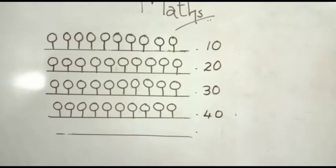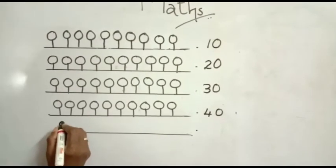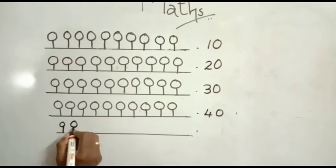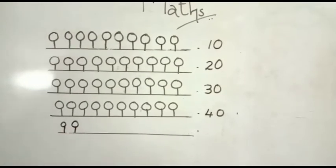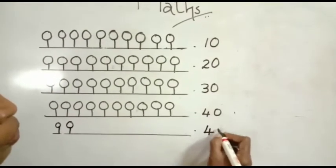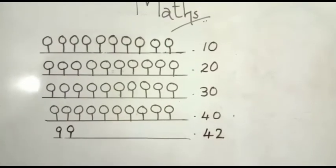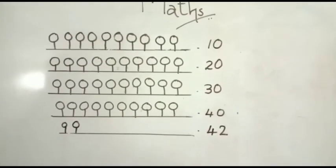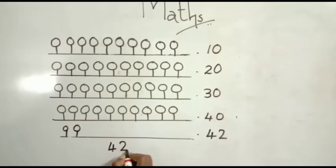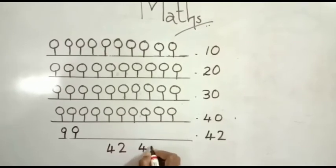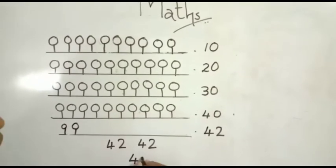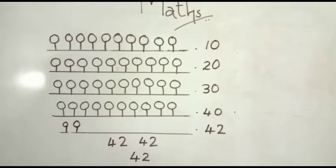Four tens and one is 41. Next number, 42. 42 has two ones. The first number is four. 42. Okay, understand?